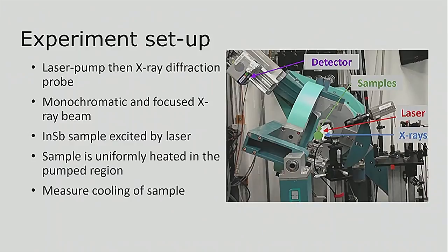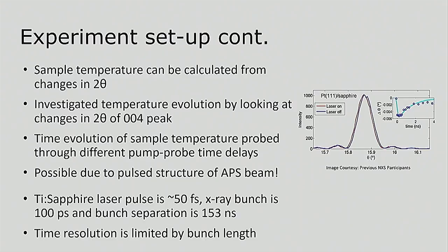The sample we looked at was indium antimonide. And the assumption we make in our experiment is that the sample is uniformly heated in the pumped region. And what we're effectively doing is we heat up the sample with a laser, and then we measure it as it cools down. And the way we probe the structure is by looking at changes in 2 theta. So we can use this to calculate the temperature of the sample. And the particular peak we looked at in our sample was the 004 peak.